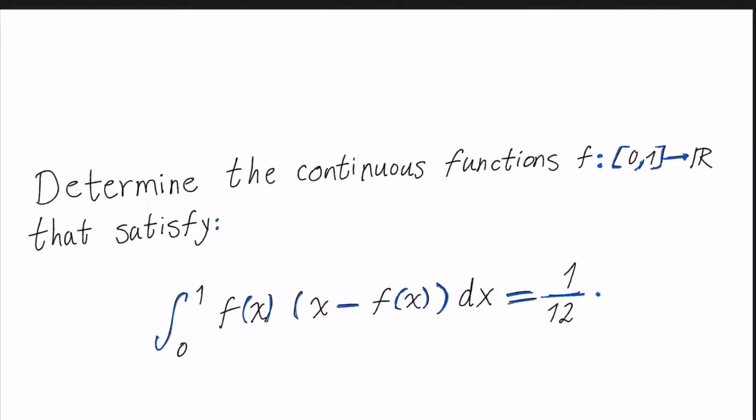So the question is the following: Determine the continuous functions from [0,1] to the real numbers that satisfy the integral from 0 to 1 of f(x) times (x - f(x)) dx equal to 1 divided by 12.